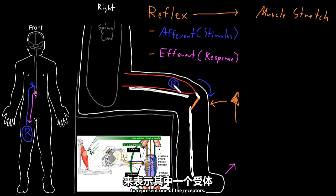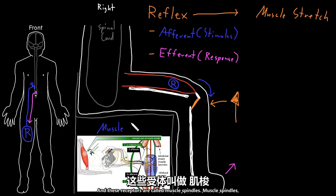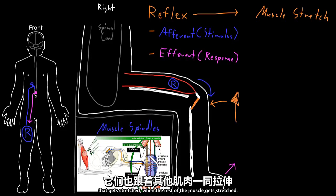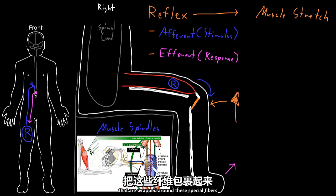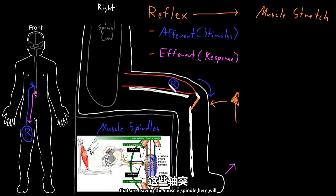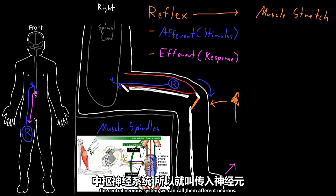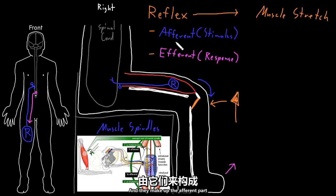I'll draw a big R here to represent one of the receptors. There are lots of these receptors spread throughout all of the skeletal muscle in the body, and these receptors are called muscle spindles. Here's a drawing of a muscle spindle inside a skeletal muscle. There are specialized little fibers inside the muscle spindle that get stretched when the rest of the muscle gets stretched, and neuron axons wrapped around these special fibers detect that stretch and send information back into the central nervous system. These axons leaving the muscle spindle travel through peripheral nerves and enter either the spinal cord or the brain stem. Since these are neurons carrying information into the central nervous system, we can call them afferent neurons, and they make up the afferent part of the muscle stretch reflex.